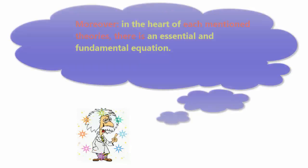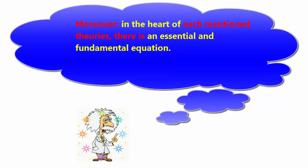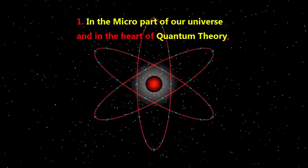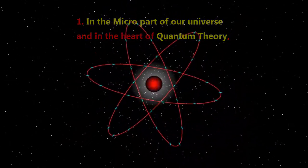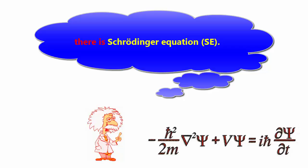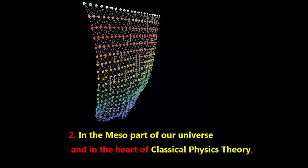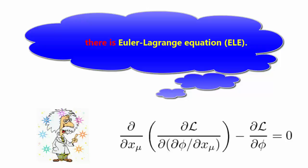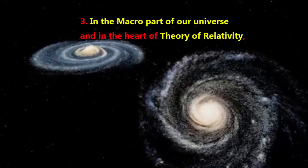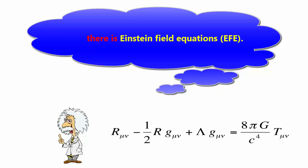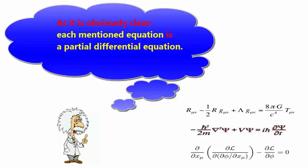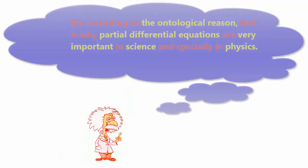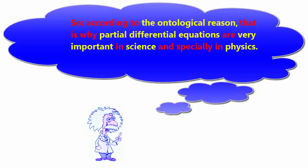The theory of relativity studies the macropart of our universe. Moreover, in the heart of each of these theories there is an essential and fundamental equation. In the heart of quantum theory there is the Schrödinger equation. In the heart of classical physics theory there is the Euler-Lagrange equation. In the heart of the theory of relativity there is the Einstein field equation. As is clearly evident, each of these equations is a partial differential equation. So, according to the ontological reason, that is why partial differential equations are very important in science and specially in physics.